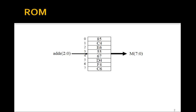Here's a ROM, a read-only memory, that contains eight memory locations. The addresses are labeled 0 to 7. So there's a 3-bit address, address 2 down to 0, which goes from 0, 0, 0 to 1, 1, 1.